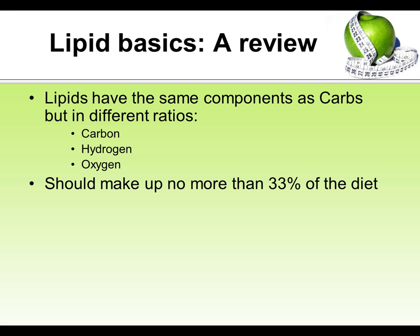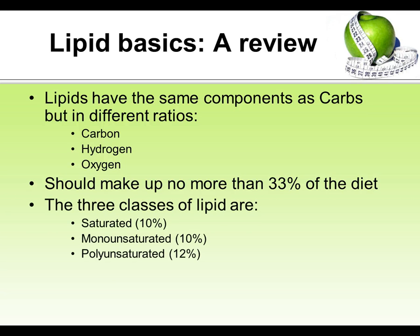When looking at lipids in our diet, we want to keep around a third, or 33%, of our diet in the form of fat. This can change depending on the intensity and type of exercise, so an athlete may adjust this slightly. There are three different classes of lipids: saturated, monounsaturated, and polyunsaturated. Ideally we want to go down a polyunsaturated route, but the other two also have important elements that your body requires.